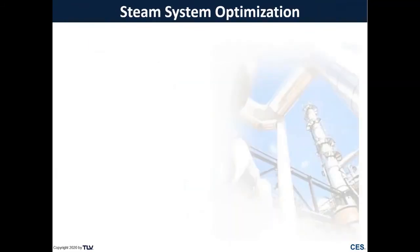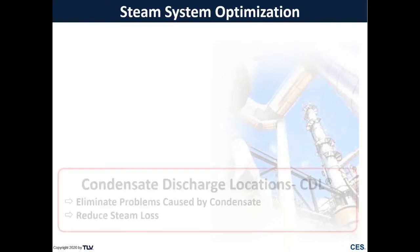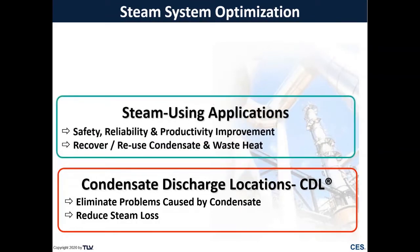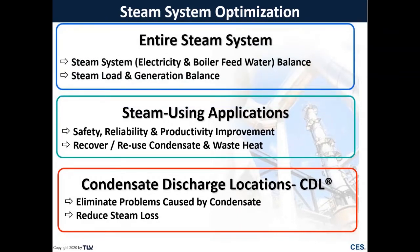If we look at steam system optimization, there are really three different phases. The first is managing and optimizing our condensate discharge locations, or CDLs — eliminating problems caused by backed-up condensate such as water hammer or decreased production, and reducing steam loss through leaking traps or open bypasses. The second is optimizing steam-using applications for safety, reliability, and productivity. The final step is optimizing the entire steam system balance, condensate recovery, and boiler feed water balance.